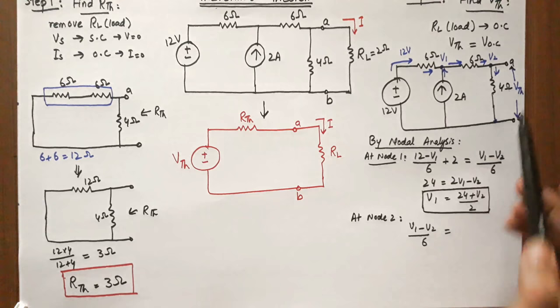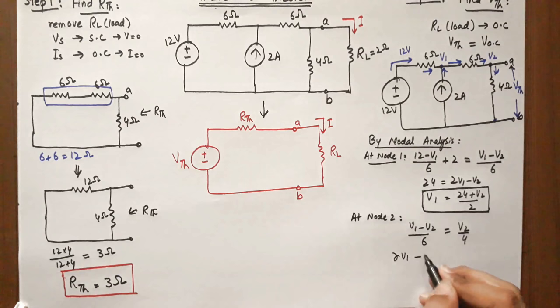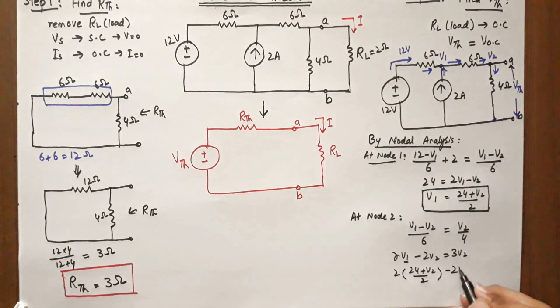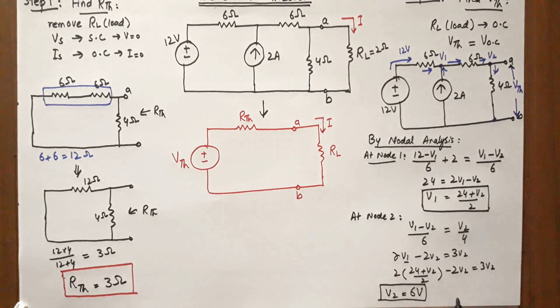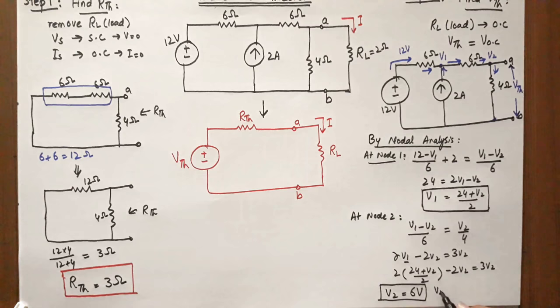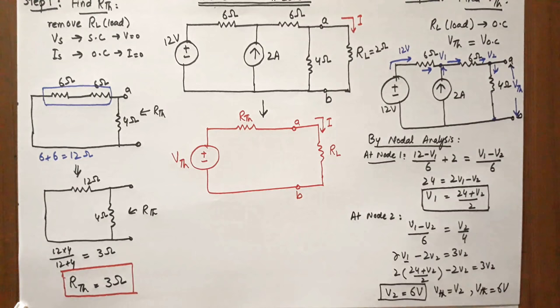Simplifying V1 minus V2 over 6 equals V2 over 4 gives 2V1 minus 2V2 equals 3V2. Substituting the expression for V1, we find V2 equals 6V. Since V_thevenin equals V2, our second parameter V_thevenin equals 6 volts. We have now found both parameters: V_thevenin and R_thevenin.